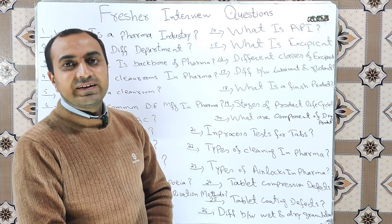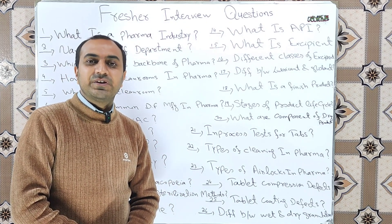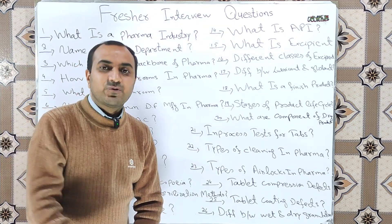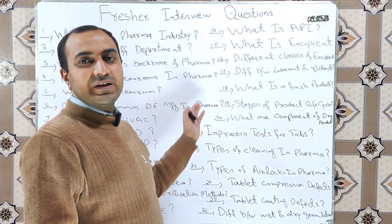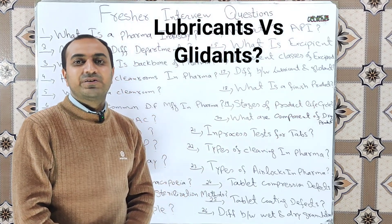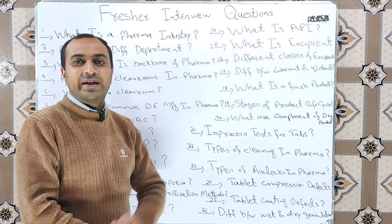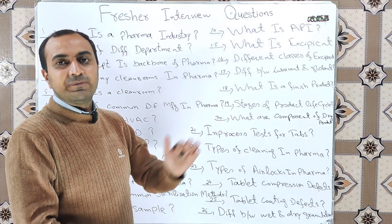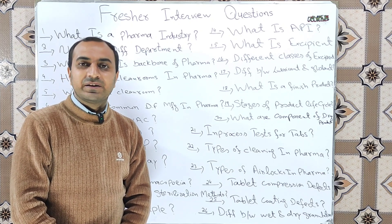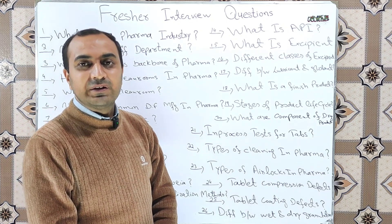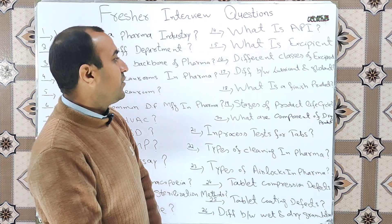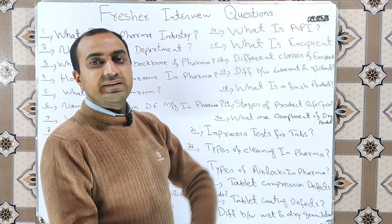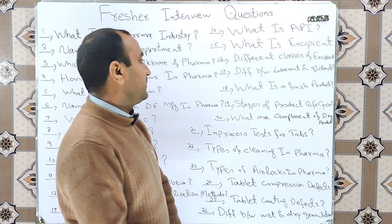What are the different classifications of excipients? There are different classes of excipients: diluents, binders, disintegrants, glidants, lubricants, stabilizers, antioxidants, and preservatives. What is the difference between lubricants and glidants? Lubricants reduce friction between machine parts and the product and prevent sticking. Glidants reduce inter-particle friction and enhance flow. A common lubricant example is magnesium stearate, and a common glidant is colloidal silicon dioxide.